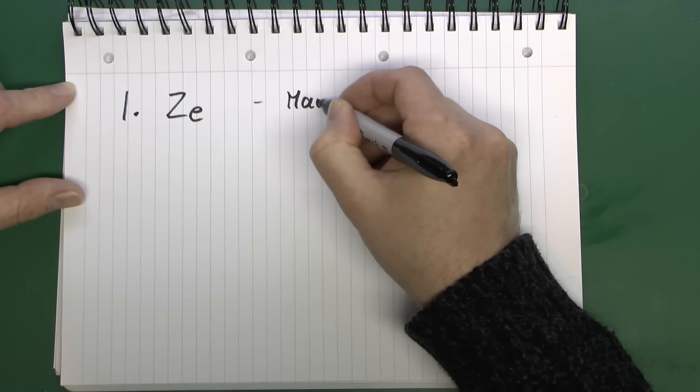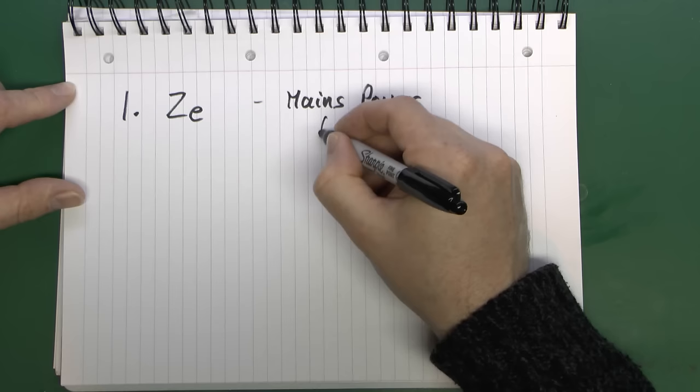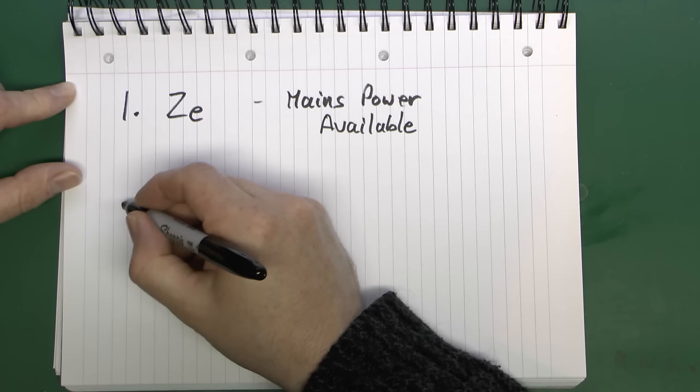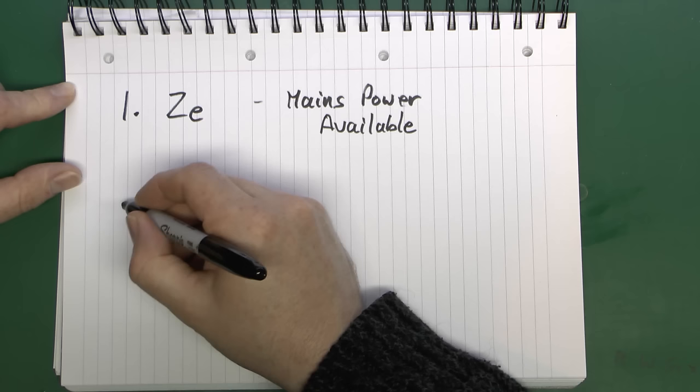This is by far the most easy and hence the most common method that is used. However, the problem with this is that it does require that mains power is available. So on an installation that actually has power available then that's the one used, and we've done a separate video on that. However in the case that power is not available, which would be if there was a new installation and power hadn't been connected yet,